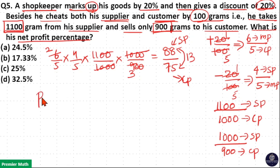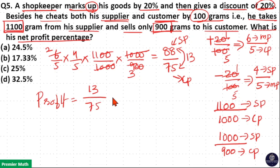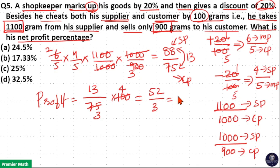Net profit is equal to (selling price minus cost price) / cost price into 100 = 13 / 75 into 100. 25 goes 3 times in 75 and 4 times in 100, so 13 into 4 = 52, and 52 by 3 = 17.33. So the answer is option B: 17.33% is the net profit.